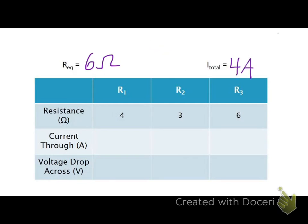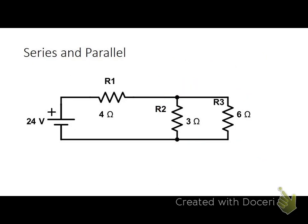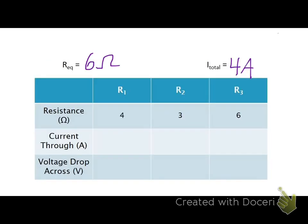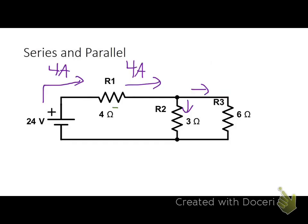So with this new information, I can head back to my original picture and draw my 4 amps coming out of the battery. And check it out. All 4 amps have to go through R1. Now after they pass 4 amps through R1, they split one way or the other. But that's enough for me to put 4 amps through R1 and I can find the voltage drop over R1 through V equals IR. 4 times 4 is 16 volts. So minus 16 volts as 4 amps go through it.